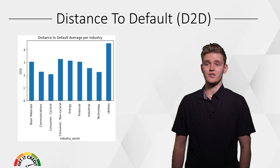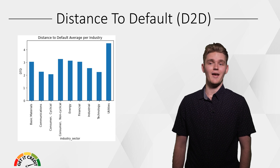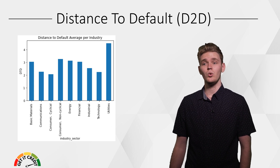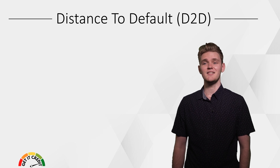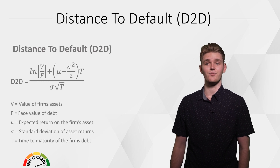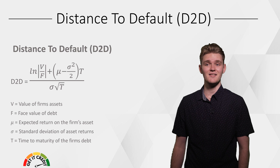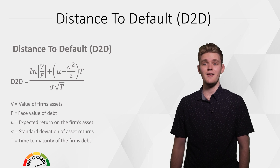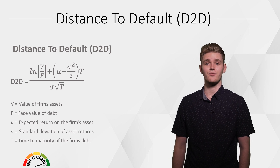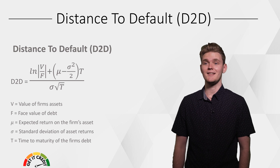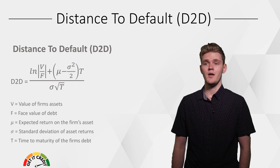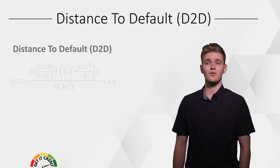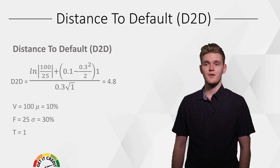Here you can see the D2D average per industry for the ASX. As seen, all industries mentioned are sitting within that zero to five range. D2D takes into account key factors such as: the value of the firm's assets (V), face value of debt (F), expected return on the firm's assets (mu), standard deviation of asset returns (sigma), and time to maturity of the firm's debt (T).